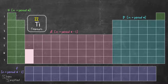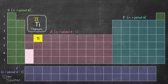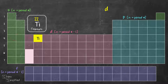Next, we move on to titanium, which has 22 electrons and is located in the D block. For D block, the relationship between the energy level and the period is minus 1. Even though titanium is in period 4, the number we write in front of D is not 4 — it's 4 minus 1, which is 3. Titanium is the second member, so we write a superscript 2, giving us 3d2.